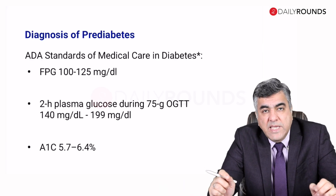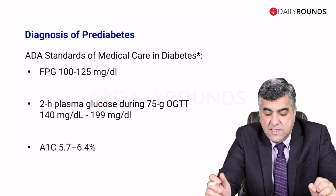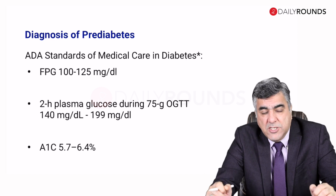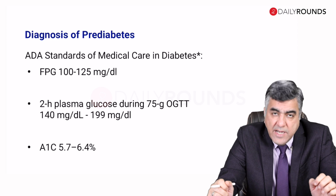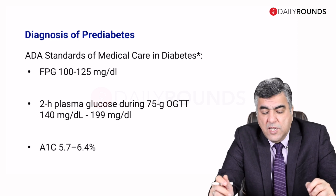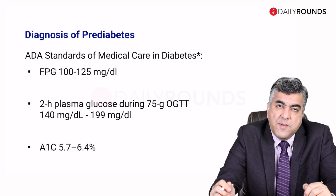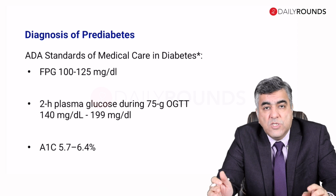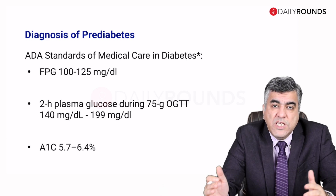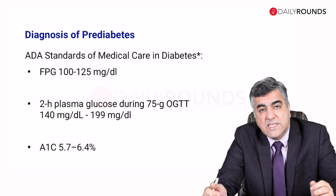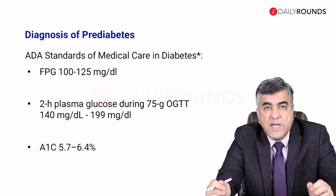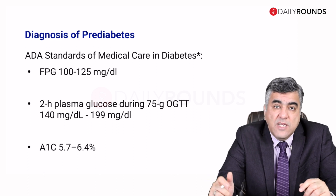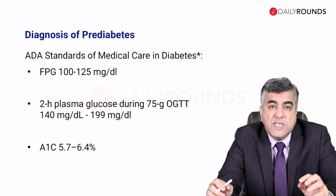Let's look at the means of diagnosing prediabetes. The ADA standards of medical care in diabetes gives us the recommendations: you can diagnose prediabetes if an individual has their fasting plasma glucose between 100 to 125 milligram percent, and/or the 2-hour plasma glucose after a 75-gram OGTT lies between 140 to 199 milligram percent, and/or an HbA1c lying between 5.7 to 6.4 percent.